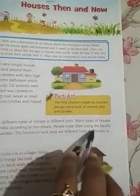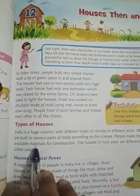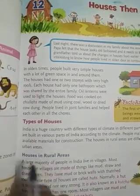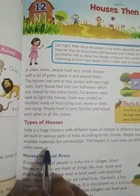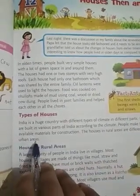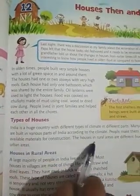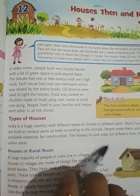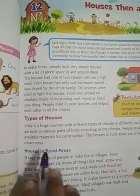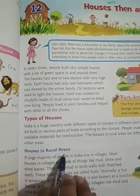People make them using the locally available materials for construction. Jo log hote hain wo locally available material se construction karte hain. The houses in rural areas are different from the houses in urban areas. Tomorrow we will discuss houses in rural areas.